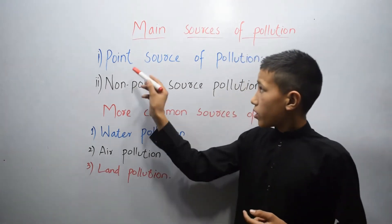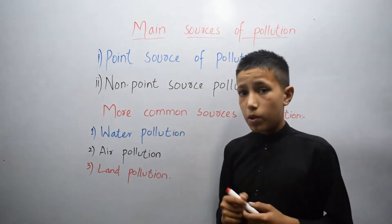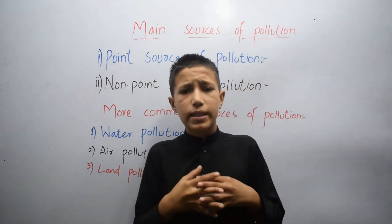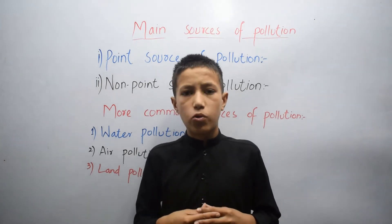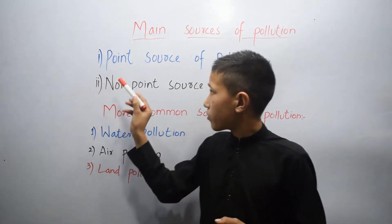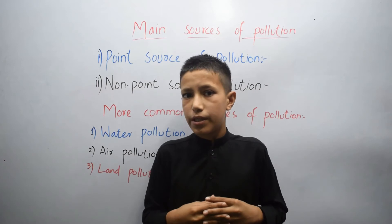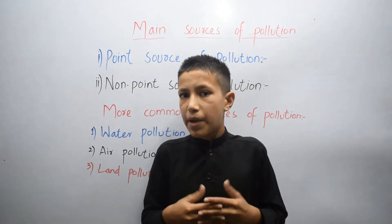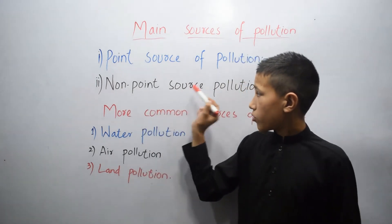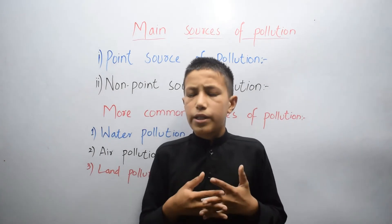The first one is point source pollution, and the second one is non-point source pollution. Any single recognizable source of pollution from which pollutants are discharged is called point source pollution — for example, a pipe, ditch, ship, or factories.